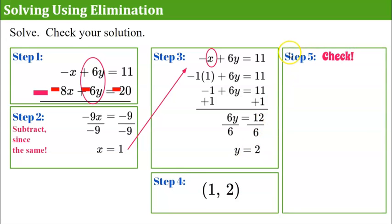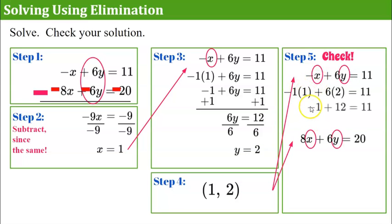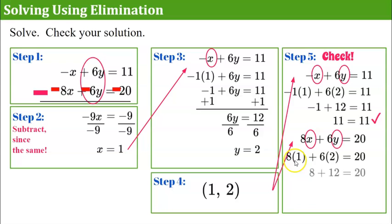Step 5: check. Bring over our two original equations with x equals 1 and y equals 2. Negative 1 times 1 is negative 1, and 6 times 2 is 12: negative 1 plus 12 equals 11 — it checks. For the second equation: 8 times 1 is 8 and 6 times 2 is 12: 8 plus 12 equals 20 — it checks. Our solution is the ordered pair (1, 2).